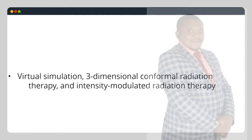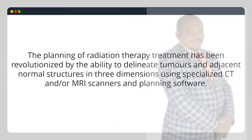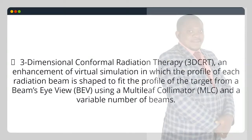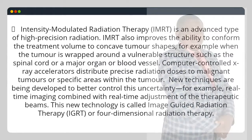Virtual simulation, 3-dimensional conformal radiation therapy (3D-CRT), and intensity modulated radiation therapy (IMRT). The planning of radiation therapy has been revolutionized by the ability to delineate tumors and adjacent normal structures in 3 dimensions using specialized CT and/or MRI scanners and planning software. Virtual simulation allows more accurate placement of radiation beams than conventional X-rays. 3D-CRT shapes the profile of each radiation beam to fit the profile of the target from a beam's eye view (BEV) using a multileaf collimator (MLC). IMRT is an advanced type of high-precision radiation that improves the ability to conform the treatment volume to concave tumor shapes, for example when the tumor is wrapped around a vulnerable structure such as the spinal cord or a major organ or blood vessel.